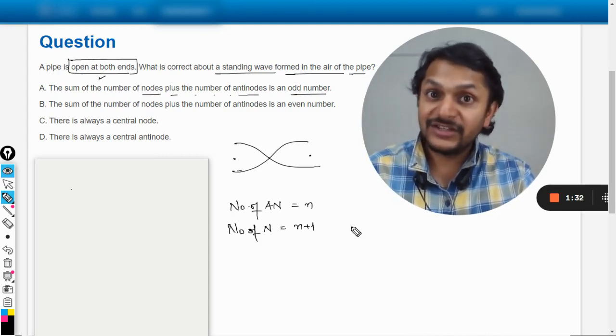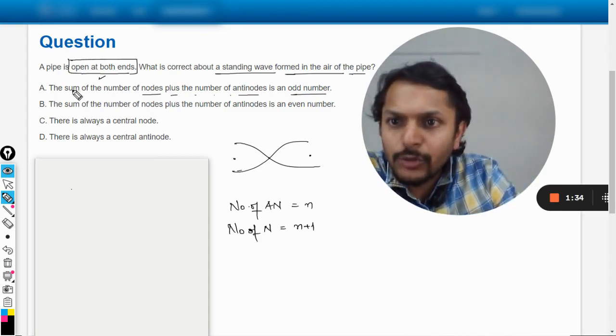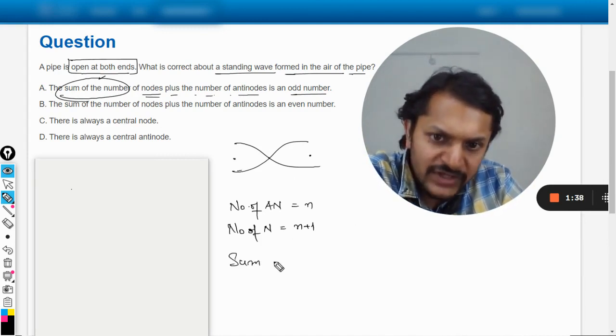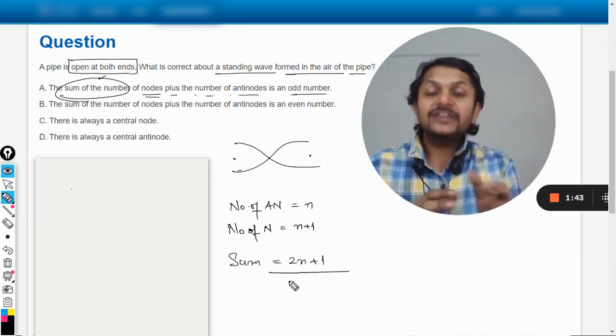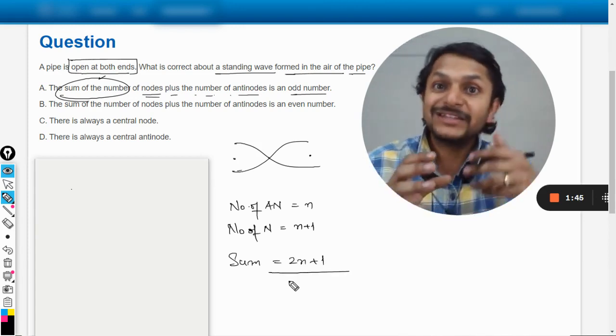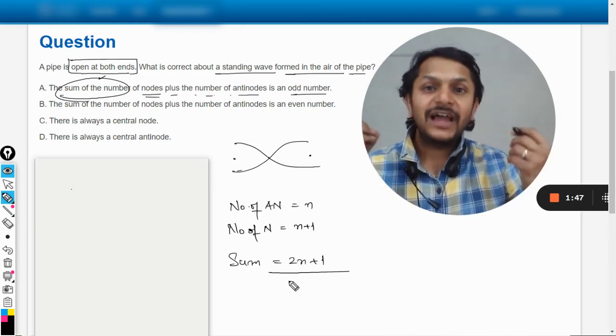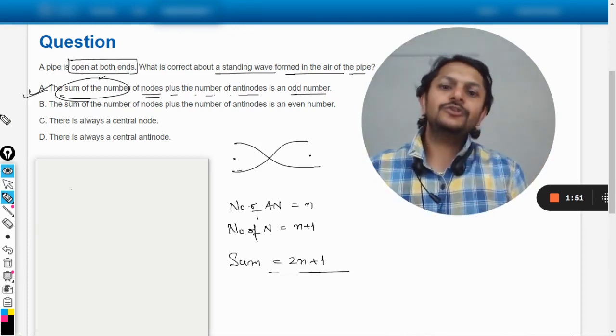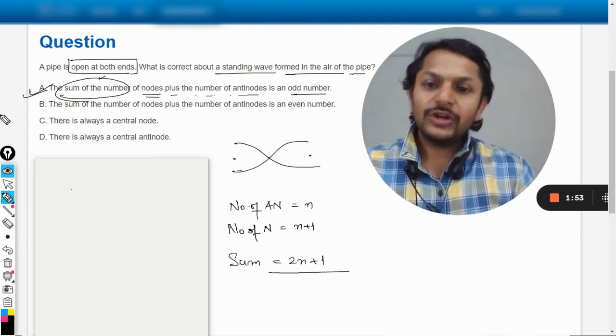Now for this particular case of both ends open, I have already created this thing. So let us talk about the sum of the number of nodes and the number of antinodes. So the sum of this will be 2n plus 1. Clearly, 2n is always an even number, but 2n plus 1 is always an odd number. So this option A is absolutely correct.